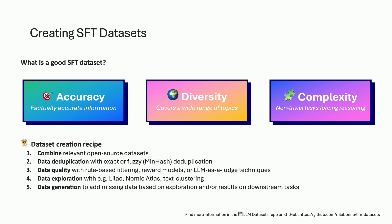Then you have diversity — you want to cover as many topics as you can. Of course it depends on your use case, because if you do summarization you won't be as general as if you do general purpose fine-tuning. But it's always a good idea to include a lot of different topics and different writing styles in the dataset. Finally, you have complexity — this one is a bit less trivial. It's about giving complex tasks to the model and forcing reasoning. For example, the output will have chain-of-thought reasoning, or tasks like summarization and 'explain me like I'm a five-year-old,' which really force the model not just to answer QA-style but to reason over the prompt and give a more complex answer.